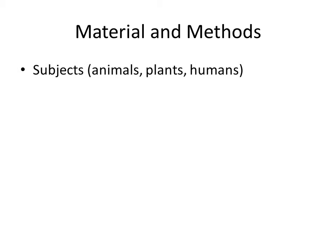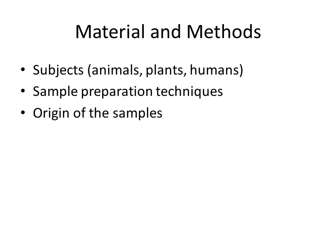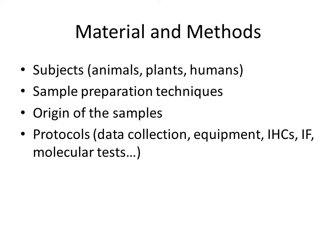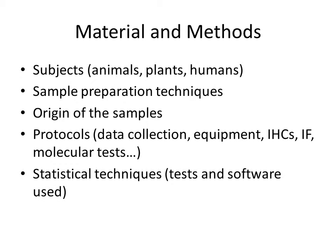For example: subjects — if you use animals, plants, or humans, what type of subjects you use; the sample preparation techniques, the origin of the samples, all your protocols, data collection, equipment — what type of equipment, and if using, for example, a centrifuge, how many RPMs the centrifuge was running; immunohistochemical stains, immunofluorescence, other molecular tests; and also statistical techniques, tests, and software used.